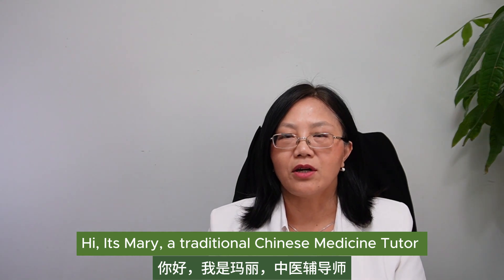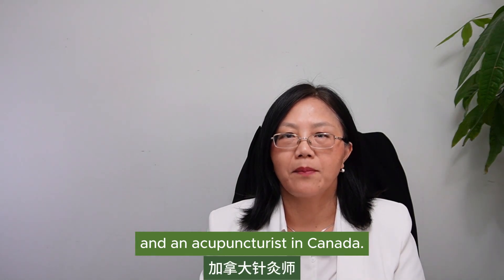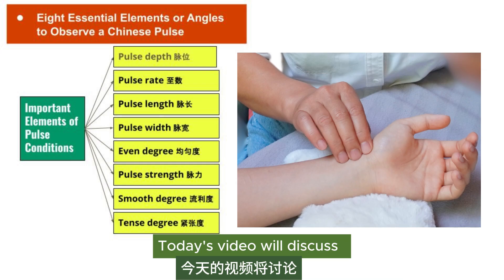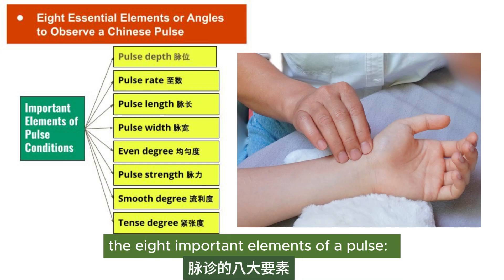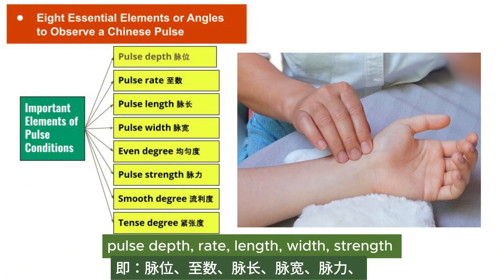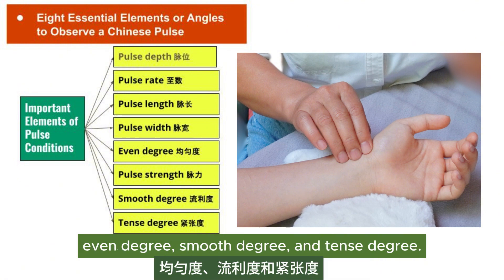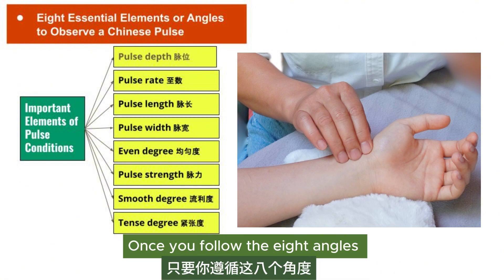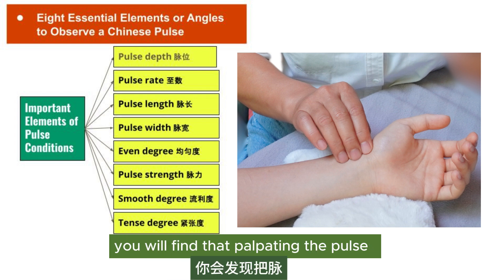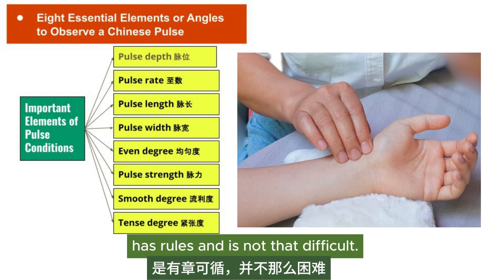Hi, it's Mary, a traditional Chinese medicine tutor and an acupuncturist in Canada. Today's video will discuss the 8 important elements of a pulse: pulse depth, rate, length, width, strength, even degree, smooth degree, and tense degree. Once you follow these 8 angles to observe the Chinese pulse, you will find that palpating the pulse has rules and is not that difficult.